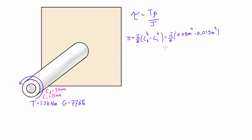When we crunch that, we get J = 1.193 × 10^-6 meters to the power of 4.